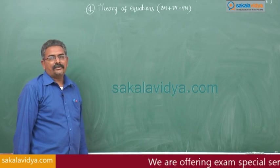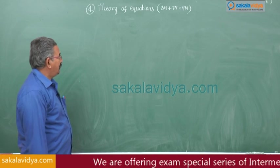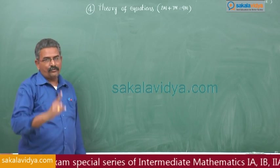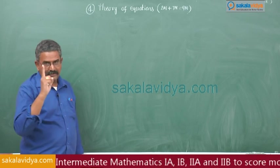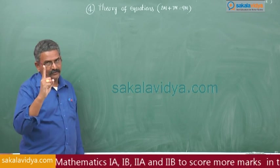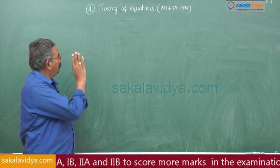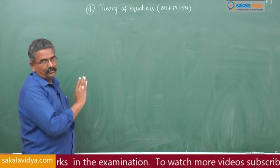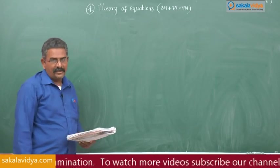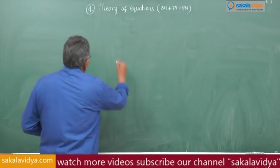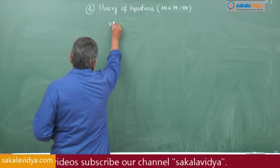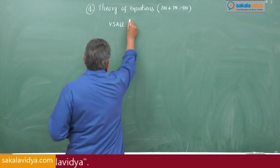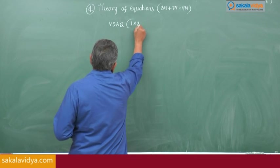Let us solve the problems on theory of equations. From theory of equations, one 2-mark question and one 7-mark long answer type question will appear, so the total weightage is 9 marks from this chapter. It is very easy. Let us solve the problems. First, very short answer type questions (VSAQ), that is 1 into 2, so 2 marks.